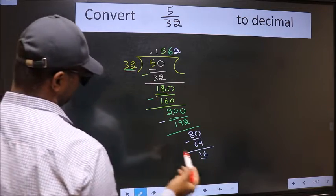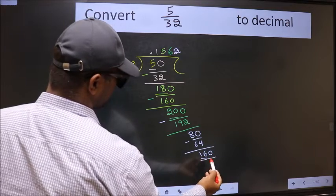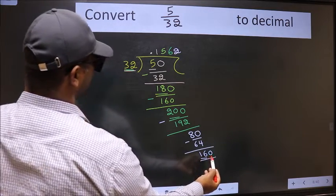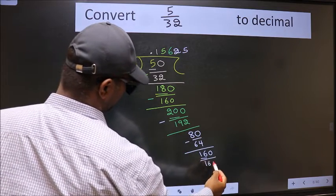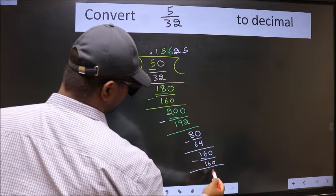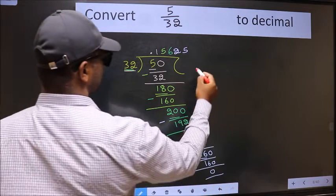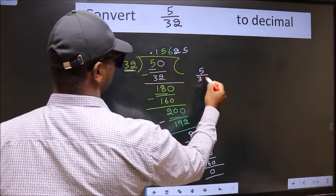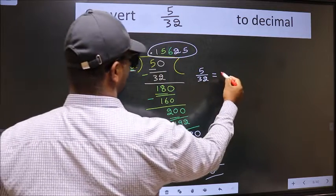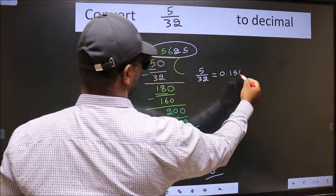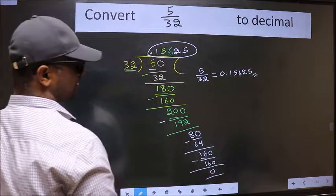Since 16 is smaller than 32 and we already have the decimal, we directly take a 0, making 160. In the 32 times table, 32 × 5 = 160. We subtract to get 0. Therefore, the decimal of 5/32 is 0.15625. This is our answer.